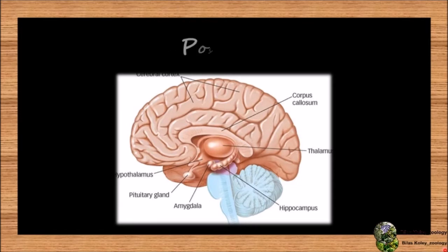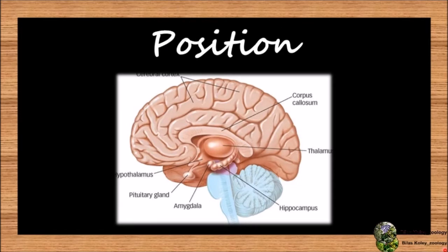The pituitary gland — if we observe its position, it is a small size, about 1.3 cm in diameter, pinkish colored, T-shaped gland present below the hypothalamus. It is also called hypophysis cerebri. It lies in a depression called sella turcica in the sphenoid bone of the cranium of the skull. It is connected to the hypothalamus by an infundibulum stalk formed of connective tissue with blood capillaries and nerve fibers.